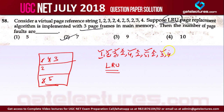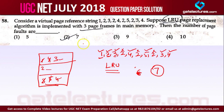Then we have 4, which is also a page fault and will replace 5. So the final content of the main memory will be 3, 2, 4, and the number of page faults are 1, 2, 3, 4, 5, 6, and 7. So we have a total of 7 page faults according to the LRU algorithm.